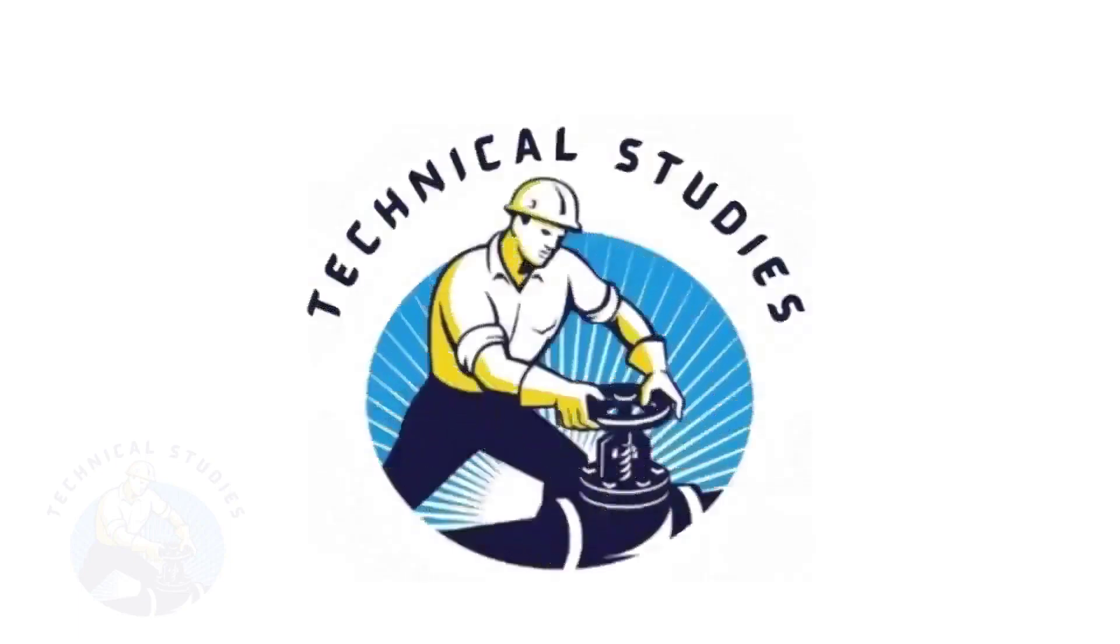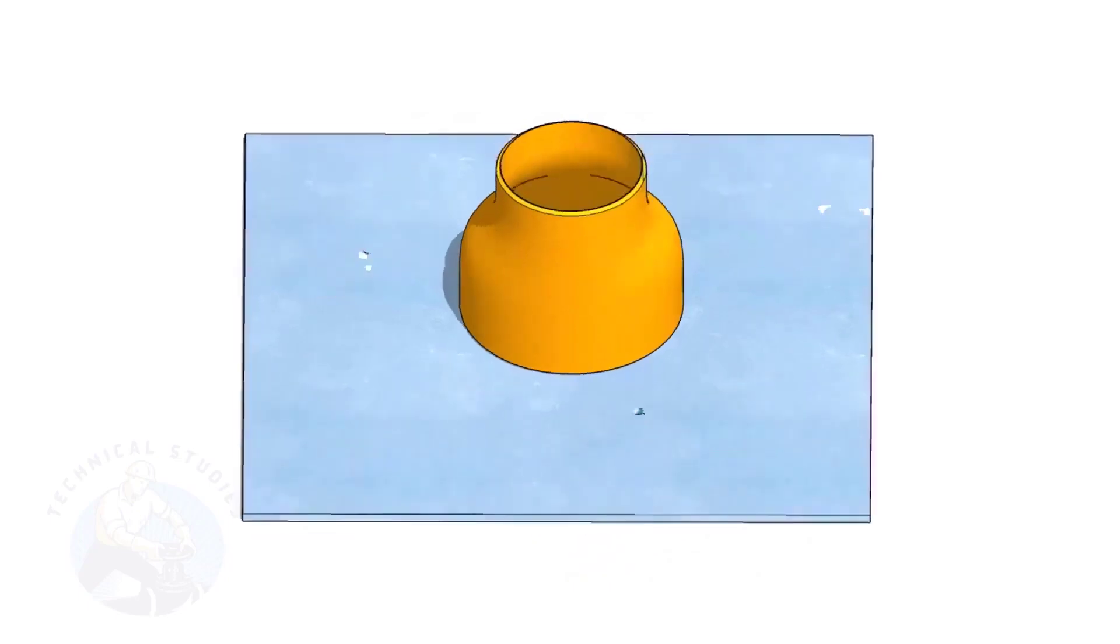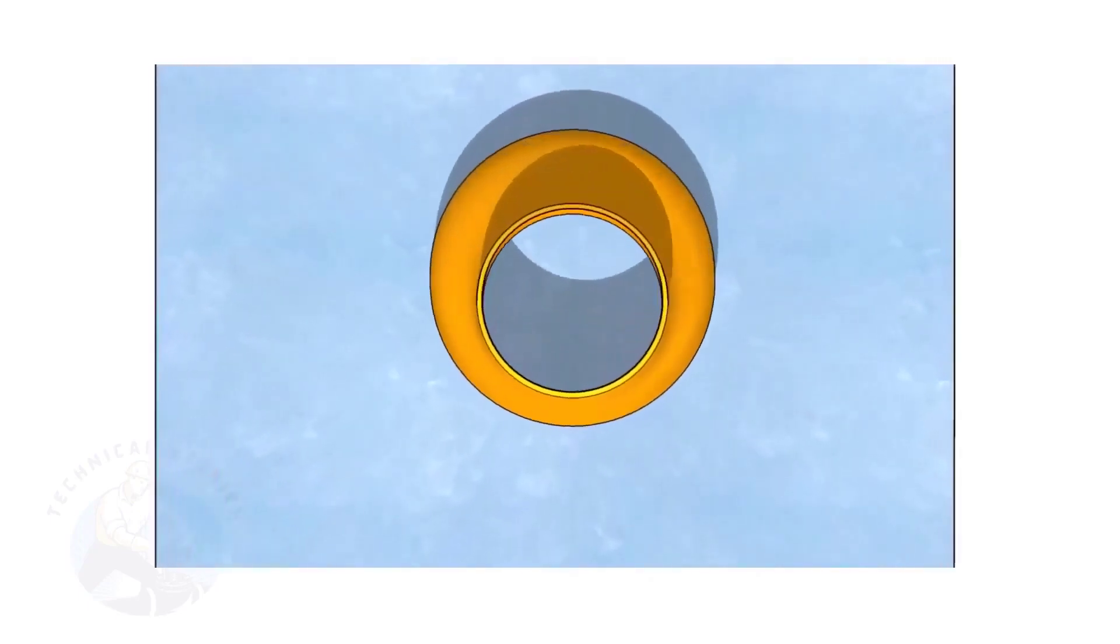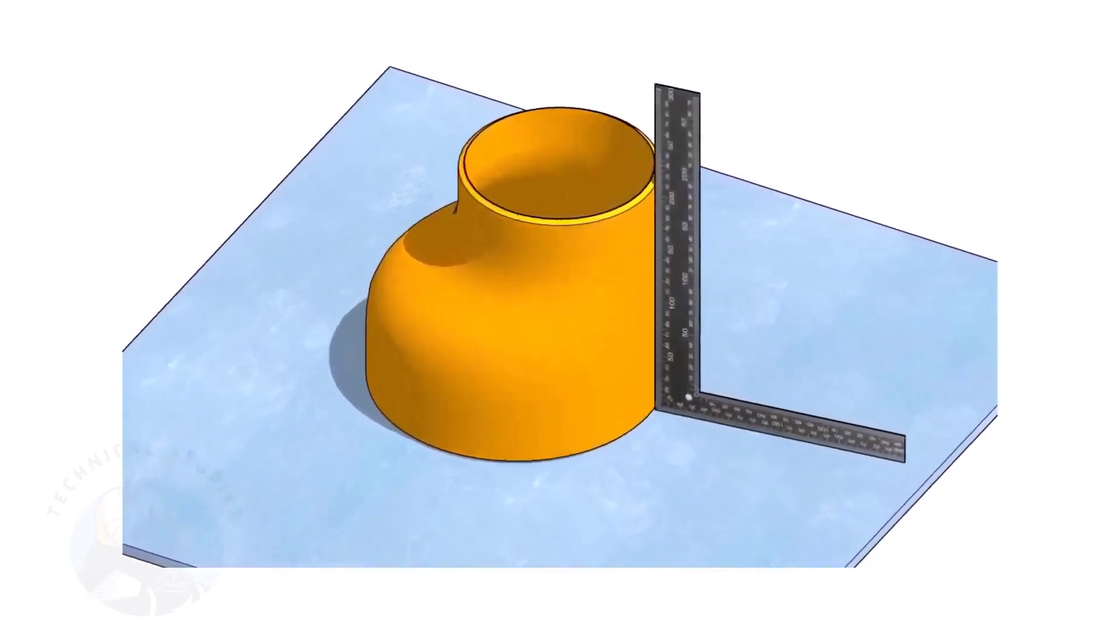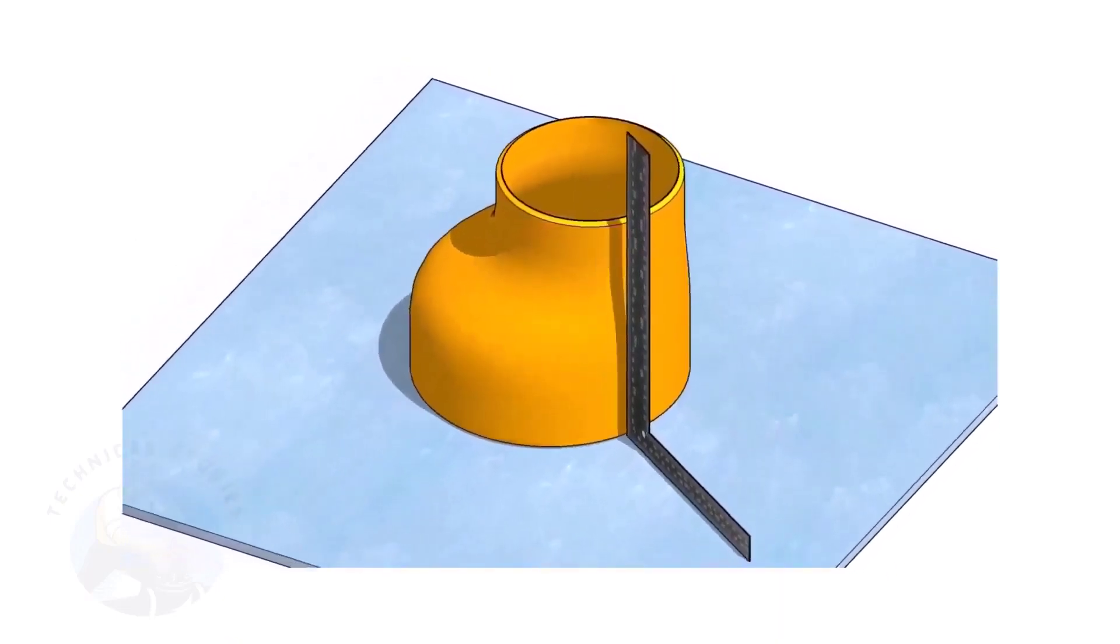Welcome to Technical Studies. Fitting an eccentric reducer to a pipe that is already fitted to another fitting like a flange, tee, elbow, etc. is a little tricky.